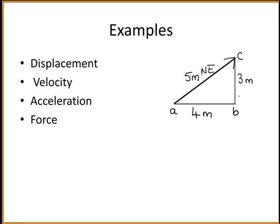Distance is a scalar quantity meaning you just gave the numerical answer which would be 7 meters. There is no direction involved. Whereas displacement is a vector quantity therefore you must give both the size and the direction.